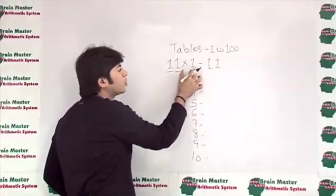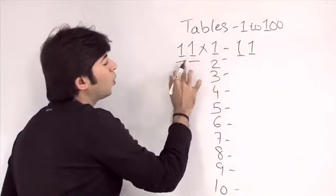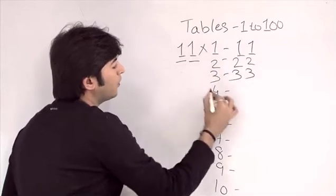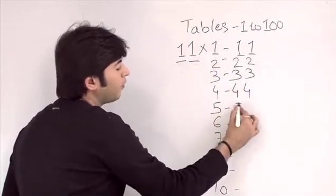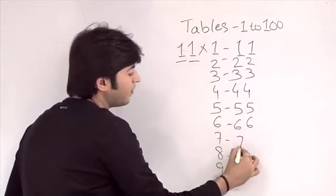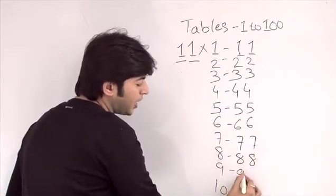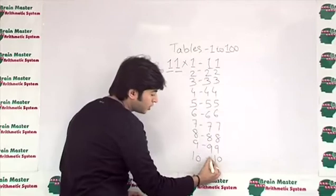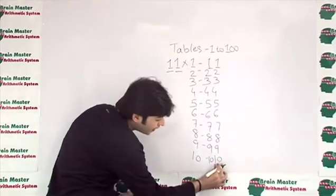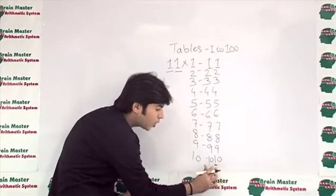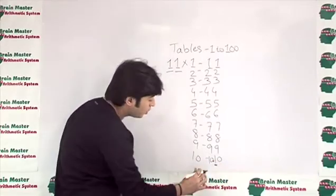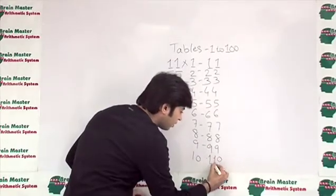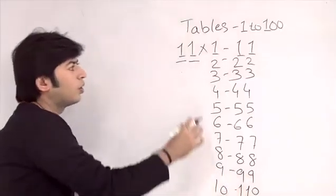So: 11×1 gives 1 and 1; 11×2 gives 2 and 2; 11×3 gives 3 and 3; 11×4 gives 4 and 4; and so on for 5, 6, 7, 8, 9. For 11×10: 1×10=10 and 1×10=10. One important concept — when we get a two-digit result on the right-hand side, the tens digit is added to the previous number. So 1 plus 10 gives 110. That completes the table of 11.